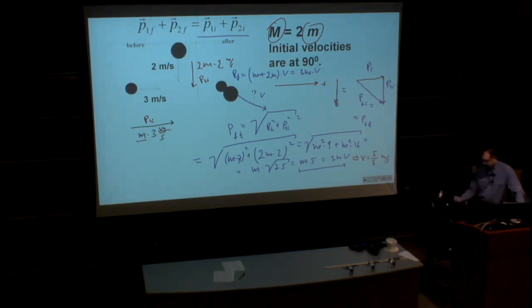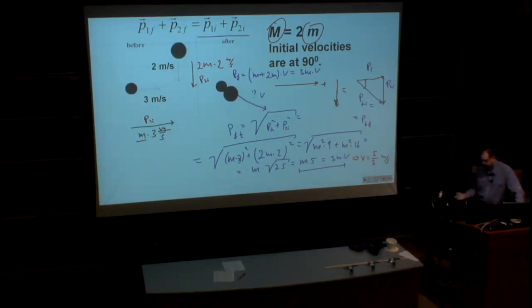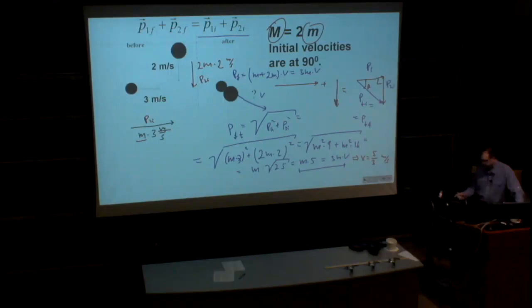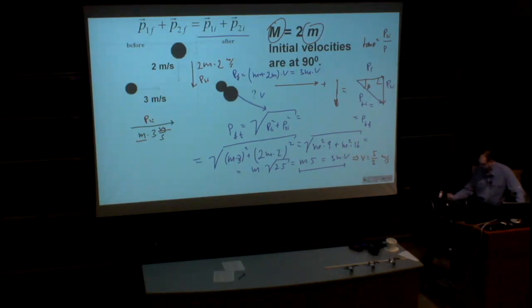This is an example of a two-dimensional collision. If we need to calculate the direction of motion of these two objects after the collision, we use the right triangle and calculate angle θ: tan(θ) = p2_initial / p1_initial, the ratio of the initial momentum of the second puck over the initial momentum of the first puck.